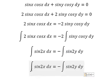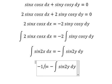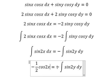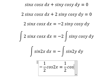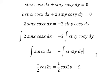The integration of sin 2x we have negative 1 over 2 cos 2x. The integration of this one we have positive 1 over 2 cos 2y and I will put C. This is the end, thank you for watching.